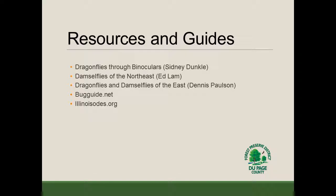That covers the most common species in our area — I anticipate you'll see many more species as you go out monitoring, but those are our most common and you should expect to see the majority of them on most routes. There are some resources and guides to help you while you're out monitoring. Dragonflies Through Binoculars is an excellent resource. Damselflies of the Northeast is what I personally use for identifying damselflies. Dragonflies and Damselflies of the East is also good. You can also use bugguide.net, a user-driven webpage where you can submit pictures for identification — the identifications there tend to be accurate. And of course, IllinoisOdes.org has much great background information on odonates in our area, recording data, reporting data, and other aspects of the program.